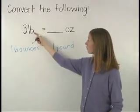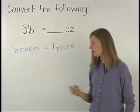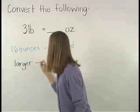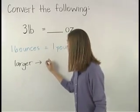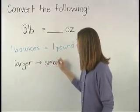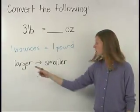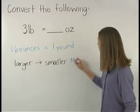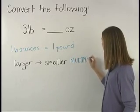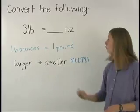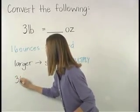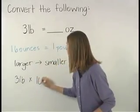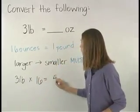Next, notice that we're going from a larger unit, pounds, to a smaller unit, ounces. When we go from a larger unit to a smaller unit, we multiply. So here, we multiply three pounds times the conversion factor, 16, which gives us 48 ounces.